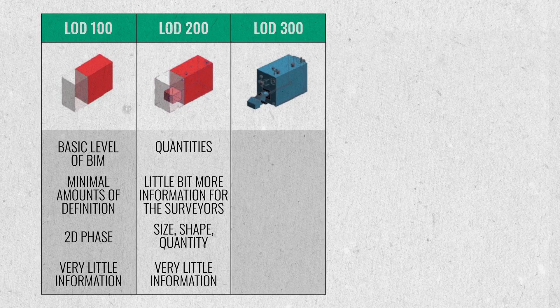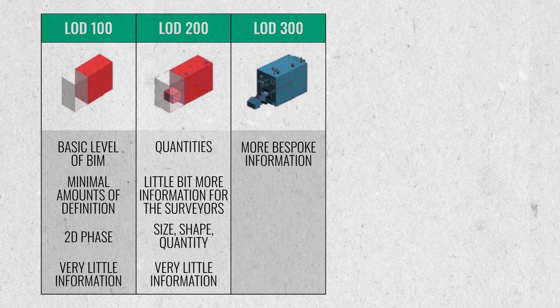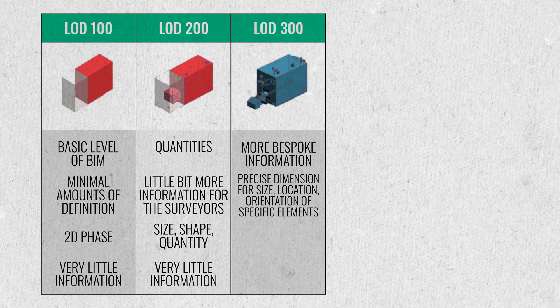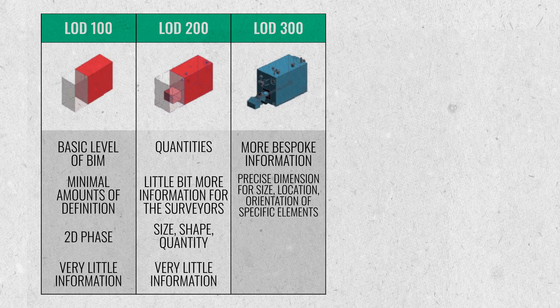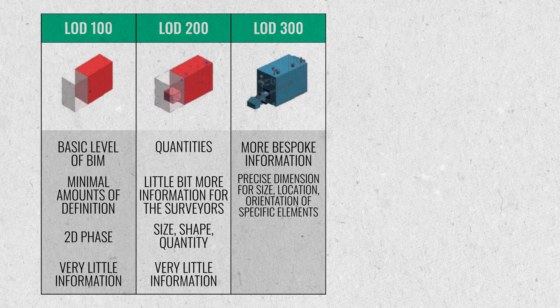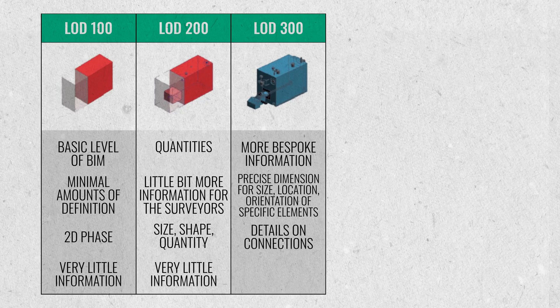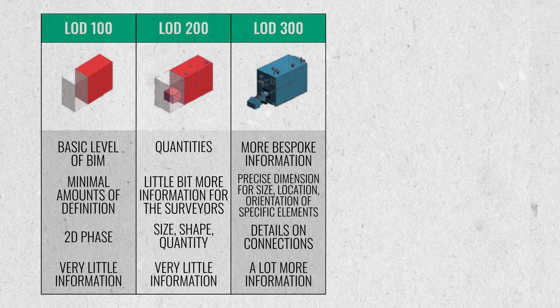LOD 300 moves to more bespoke information — you've got size, location, and orientations of specific elements, and you may even go down into what the connections are, like how many bolts are in each connection and where they're located. It has a little more information and you can see what the interfaces and connections look like. But you may not be modelling them specifically — it may just be a note on the drawings. It allows quantities to be priced a lot better but you may not have the 3D components that you're looking for.